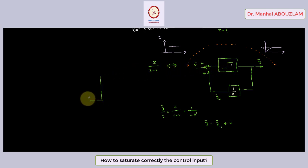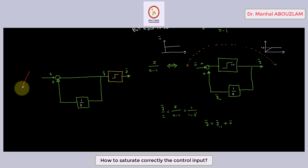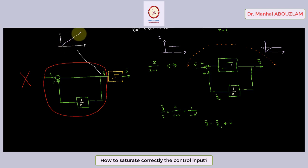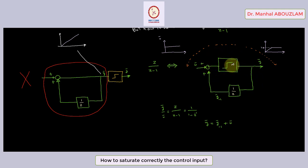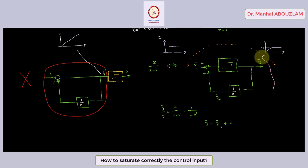Just a very important note: be careful not to put the saturation block here — this is not correct. Why? Because like that we allow the integrator to continue to do integration without limits. That's why we have to consider this block diagram, which will prevent the integrator from continuing to do integration outside of saturation bounds. So we have to put the saturation block here. In order to saturate z over z minus 1, we have to consider this block diagram and put the saturation block in this position.